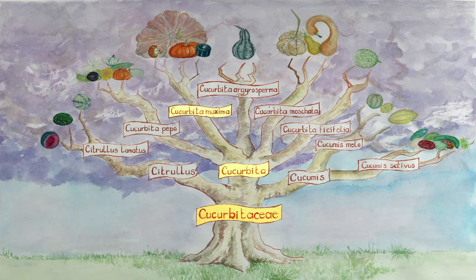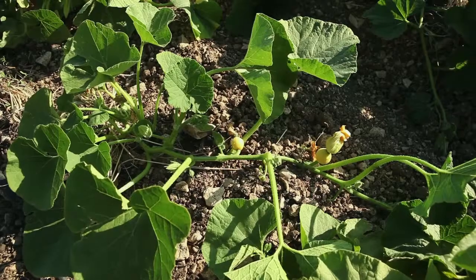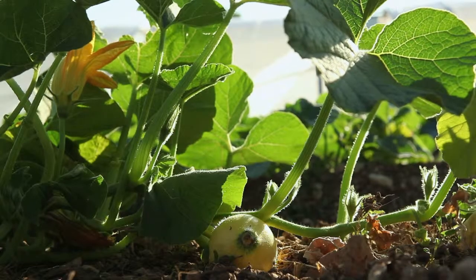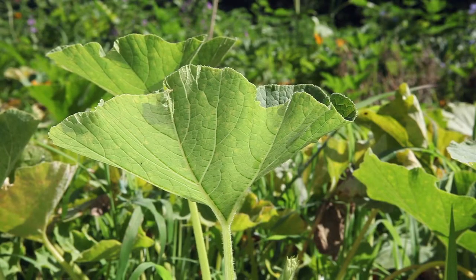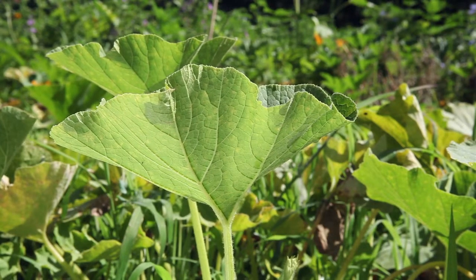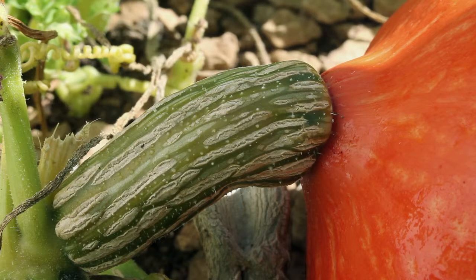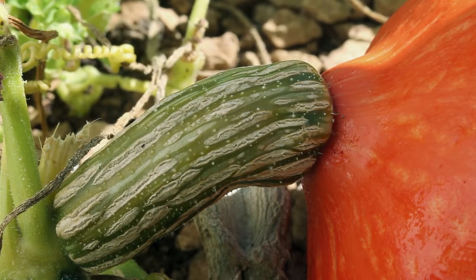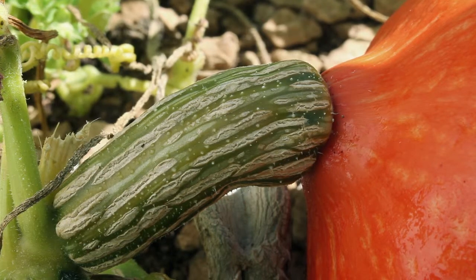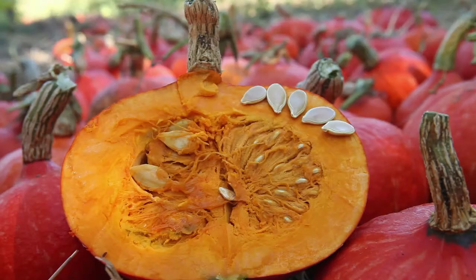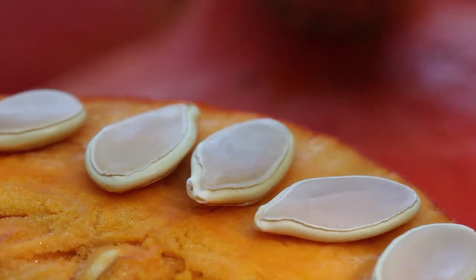Cucurbita maxima includes wild specimens which can be found in Argentina and Bolivia. It is a species with long but not very firm hairy vines that run along the ground. The leaves are big and hairy; they are never deeply cut and have round lobes. The fruit peduncle is round and looks similar to cork. It often splits and is much thicker than the stem. The seeds are often covered by a membrane that is easy to remove; they are oval and often swollen.